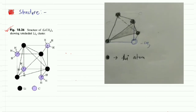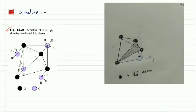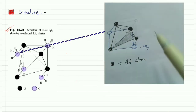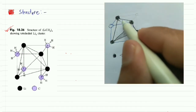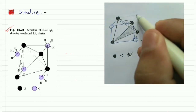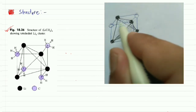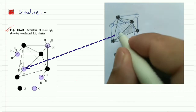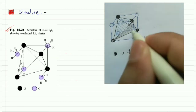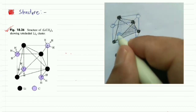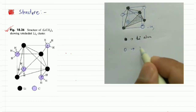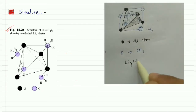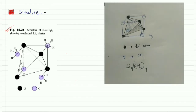Similarly, for each of the four planes of the tetrahedron, one CH₃ group forms a pyramid pointing outward. So there are four pyramidal CH₃ groups in total — one on each triangular face of the tetrahedral Li₄ core — giving the complete structure of Li₄(CH₃)₄.